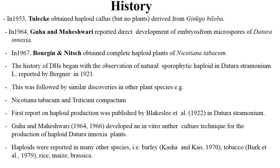Coming to the historical aspects of haploidy. In 1953, Tulecke obtained haploid culture but no plants derived from Ginkgo biloba. In 1964, Guha and Maheshwari reported direct development of embryos from microspores of Datura inoxia. In 1967, Bourgin and Nitsch obtained complete haploid plants of Nicotiana tabacum.